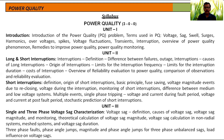In the second unit, we will discuss completely about interruptions — the two different classifications: short interruptions and long interruptions. For long interruptions: definition, origin, limits for interruption frequency, cost of interruption, reliability, evaluation of power quality, and comparison and reliability evaluation. For short interruptions: definition, origin, basic principle, voltage magnitude events due to reclosing, voltage during the interruption, monitoring of short interruptions, and the difference between medium and low voltage systems.